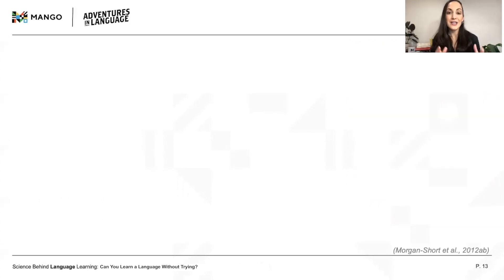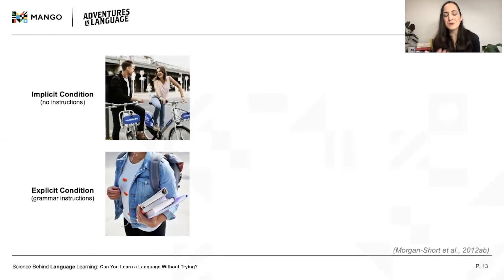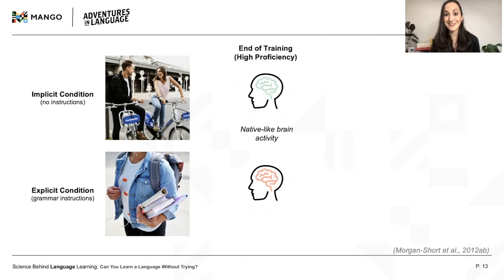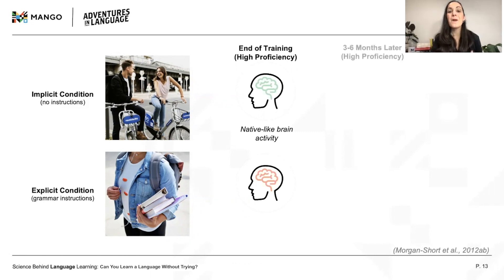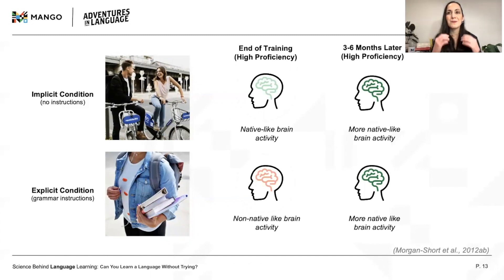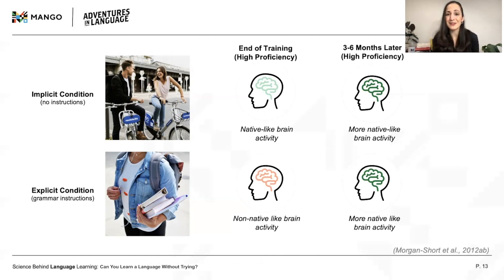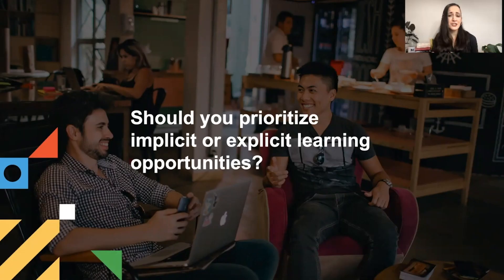Studies that include newer techniques, like eye tracking or brain measurements, have provided a more nuanced picture of implicit and explicit learning. In a study by Kara Morgan-Short and colleagues, learners were trained on a new language either implicitly or explicitly, and both groups performed similarly, eventually reaching high proficiency. But at high proficiency, only the implicitly trained learners showed native-like brain activity in their second language. When the learners were tested again several months later, both groups maintained high levels of performance, and both groups processed the second language more like native speakers. This means that while the learning paths might be different, outcomes for implicit versus explicit learning conditions may be similar, given enough input and time.